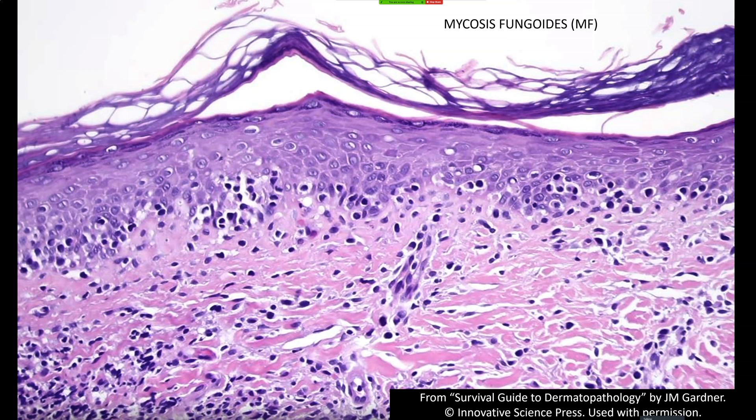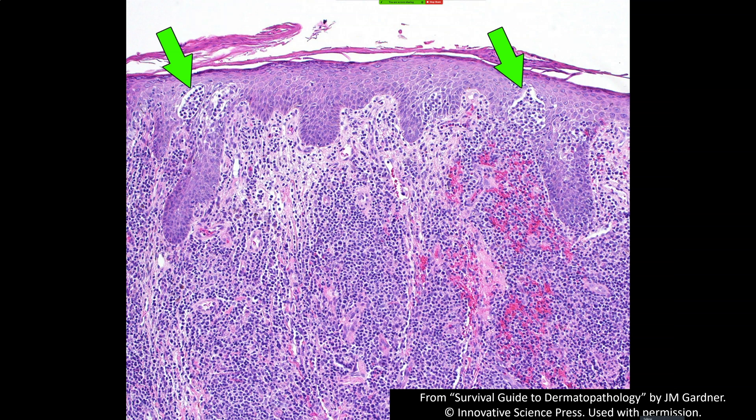The wiry collagen and the lymphocyte tagging are all useful features. Here, the tagging is highlighted by CD3, which is a marker of T-cells. Essentially all normal T-cells are CD3 positive, and most T-cell lymphomas will be CD3 positive as well. You can see they're completely replacing that basal layer with lymphocytes.